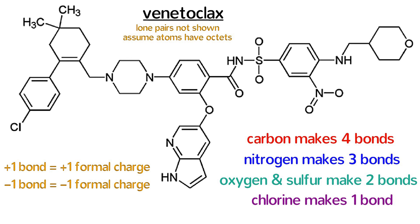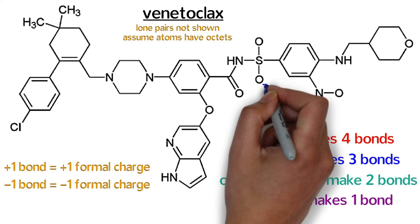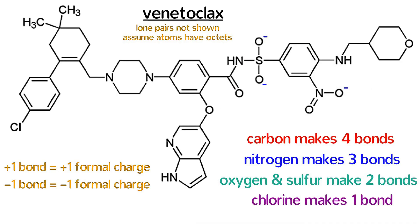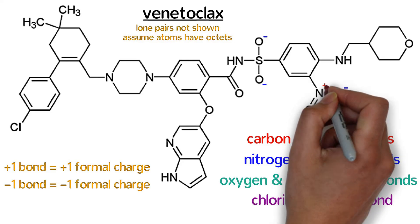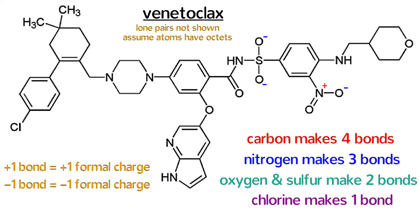A quick glance at the molecule shows us that most of the atoms have zero formal charge, but these oxygens have a negative formal charge because they have only one bond each. Likewise, this nitrogen has a positive formal charge because it has one extra bond, and this sulfur has a positive two charge because it has two extra bonds.